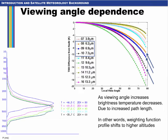All three ABI water vapor bands show this dependency on viewing angle, with the 7.3 micron band being the most susceptible to this effect and the 6.2 micron band being the least, although still significant. As viewing angle increases, the brightness temperature decreases due to increased path length. The weighting function profiles shown at the bottom are for a standard atmosphere varying the viewing angle between 0 and 80 degrees, valid for the current GOES water vapor band at 6.5 microns under clear sky conditions. As the viewing angle increases, the weighting function profile shifts to higher altitudes, therefore the brightness temperature will be colder.